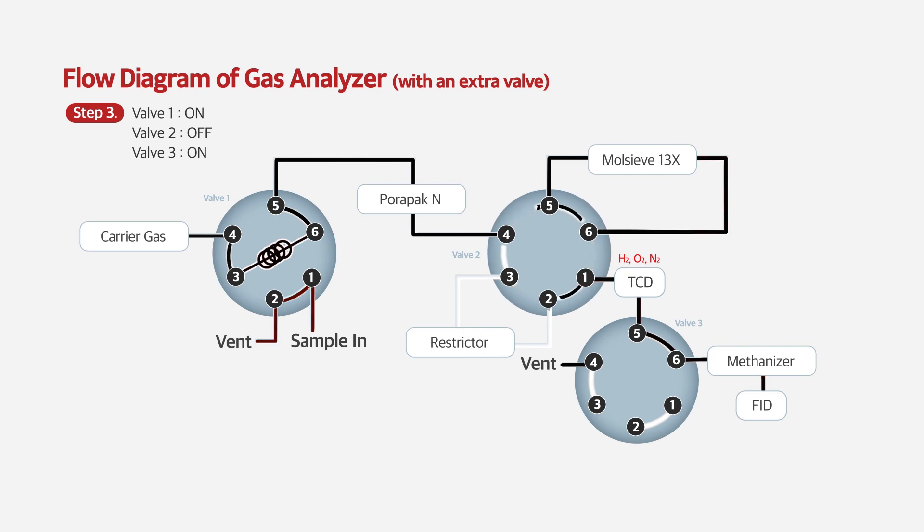After valve two is on, heavy gases such as carbon dioxide to propane are separated in Porapak N column and detected by FID. Among these gases, carbon dioxide is converted to methane in the methanizer and then detected.